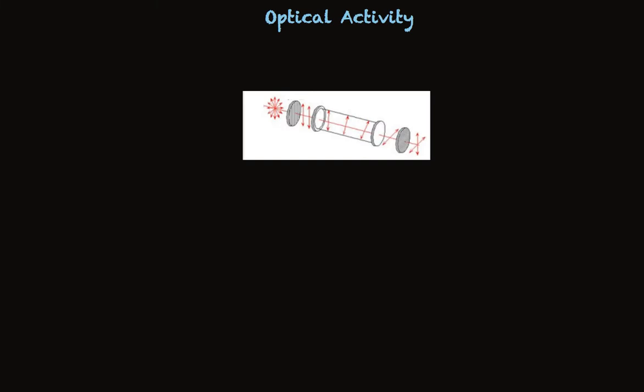Optical activity is the only physical property of enantiomers that is different. Their melting points are the same, their boiling points are the same, their solubilities in typical solvents are the same.